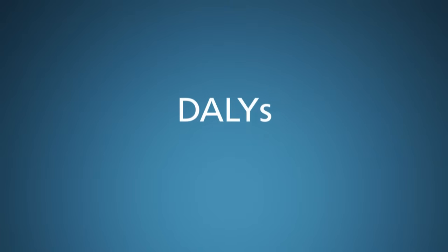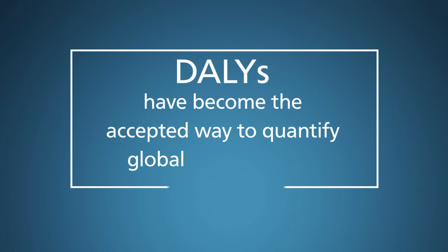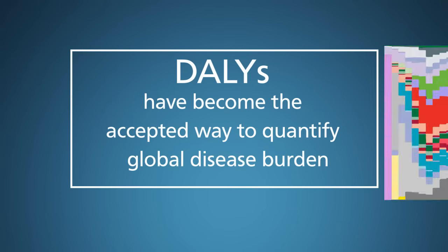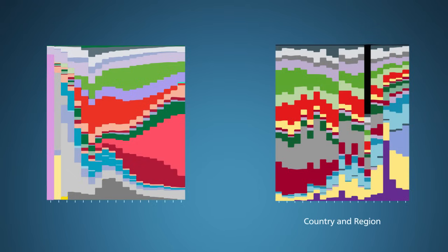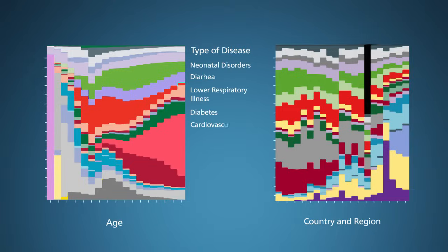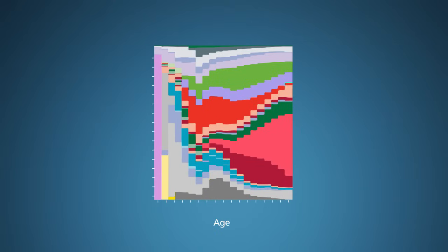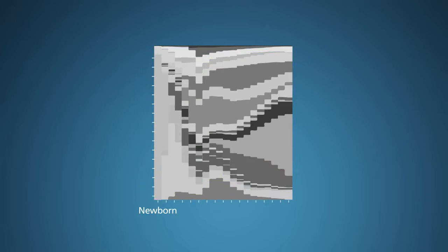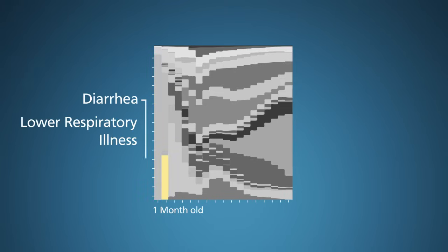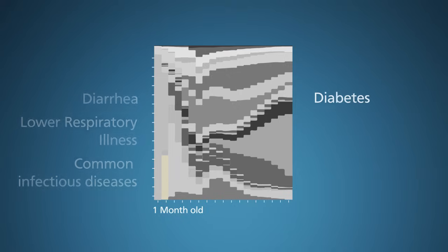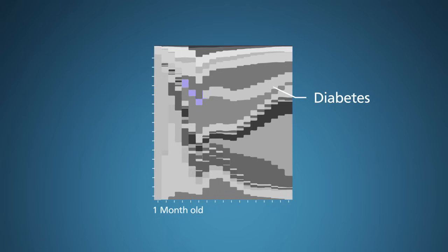Since their introduction, DALYs have become the accepted way to quantify global disease burden, allowing observers to compare and evaluate disease data as grouped by country and region, age and gender, type of disease, and more. For example, you can see the distribution of DALYs by disease and age. In newborns, most DALYs are due to neonatal disorders. For one-month-olds, diarrhea, lower respiratory illness, and other common infectious diseases cause the greatest burden. Diabetes extracts a steady toll starting in the 20s.